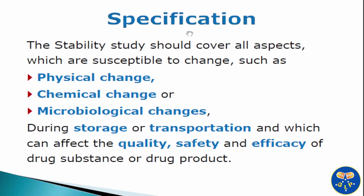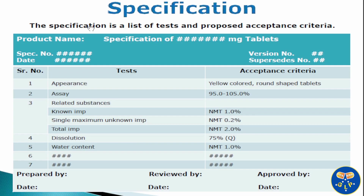Now let's start our today's topic with specification for drug substance and products. Stability studies play a critical role in ensuring the integrity and effectiveness of drug substance and drug product over time. The stability study should cover all aspects which are susceptible to change such as physical change, chemical change, or microbiological changes during storage or transportation, and which can affect the quality, safety, and efficacy of drug substance and drug product. The specification is the list of tests and proposed acceptance criteria.